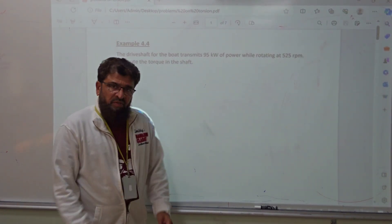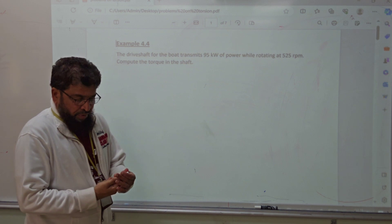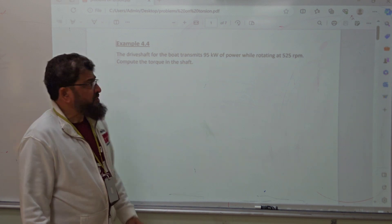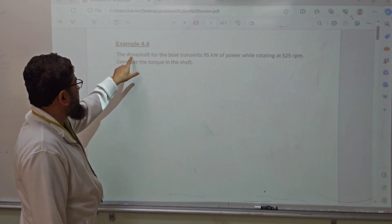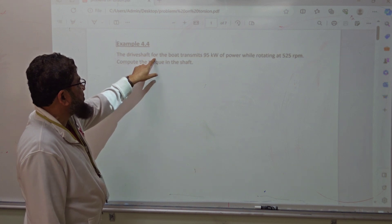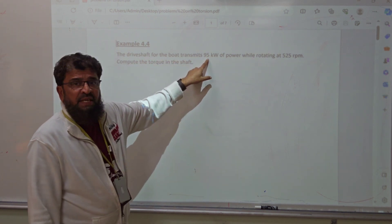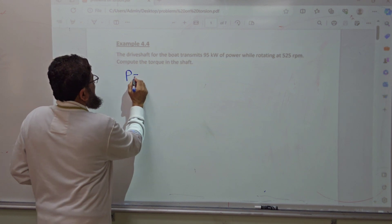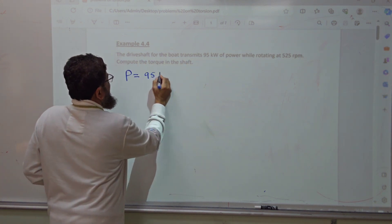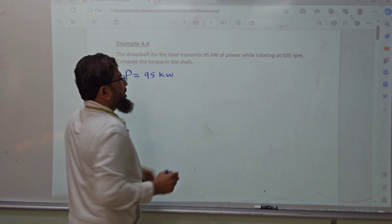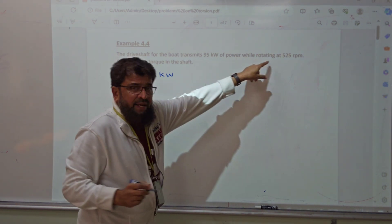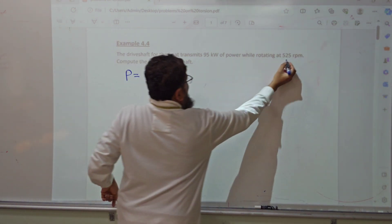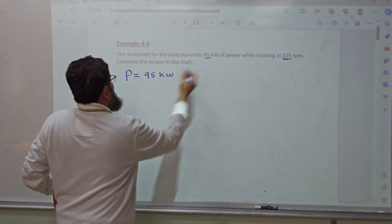Today let's solve a problem on torsion of shafts. The problem is: the drive shaft for a boat transmits 95 kilowatts of power while rotating at 525 rpm. So power P equals 95 kilowatts and the rotational speed is 525 rpm.